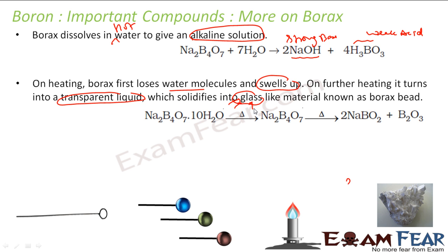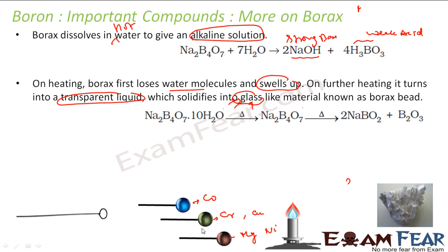This is used to determine metals. For example, manganese will give you a brown color, chromium will give you a green color, copper will also give you a green color, nickel will give you a brown color, and cobalt will give you a blue color. Different metals give different colors in the borax bead test.